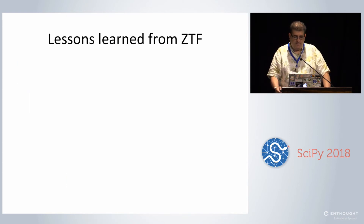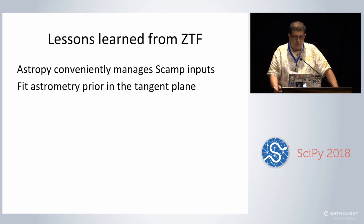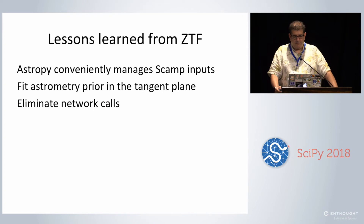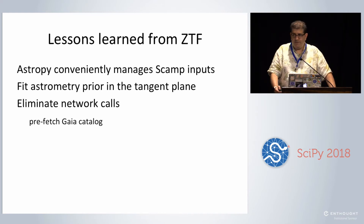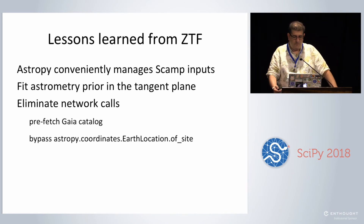What are the lessons learned from ZTF? AstroPy has a lot of utilities to conveniently manage inputs to SCAMP. Where you really want to work in fitting the astrometry prior is in the tangent plane — convert everything to that plane to do your fitting. Eliminate network calls as much as possible. We're running on a Slurm cluster with 66 machines, running maybe a thousand jobs at a time, so network calls are a real problem. We prefetch the Gaia catalogs in the format SCAMP needs. We also bypass some network calls made by AstroPy coordinates Earth location, which makes a network call to look up where Palomar is — so we hard code that sort of thing in.